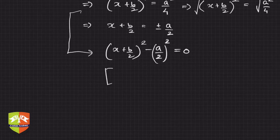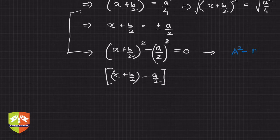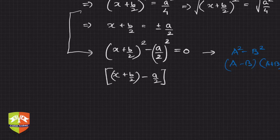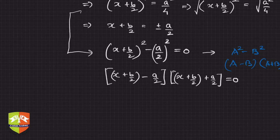We can now factorize using the difference of squares form a² − b² = (a − b)(a + b). Treating (x + b/2) as one term and (a/2) as the other, the equation factors into: (x + b/2 − a/2)(x + b/2 + a/2) = 0.